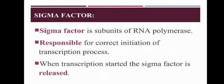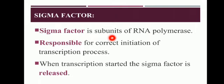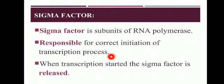Next we have the sigma factor. RNA polymerase enzyme does not work on its own; it needs a factor called the sigma factor. The sigma factor is attached to RNA polymerase and when it comes with RNA polymerase, the initiation process starts. The sigma factor helps RNA polymerase attach to the promoter site on the DNA. Once initiation starts, the sigma factor detaches from RNA polymerase and is released.